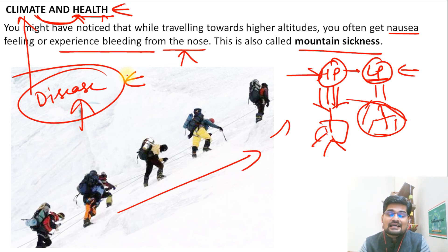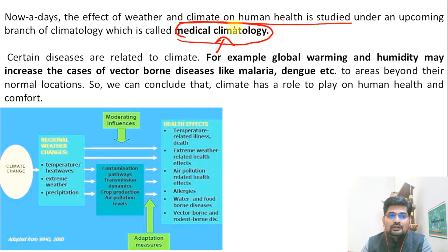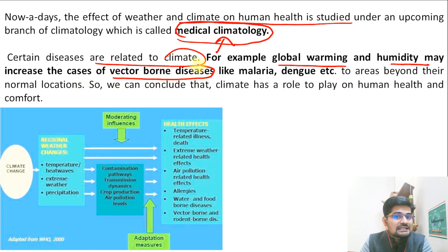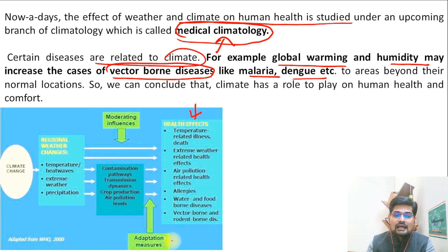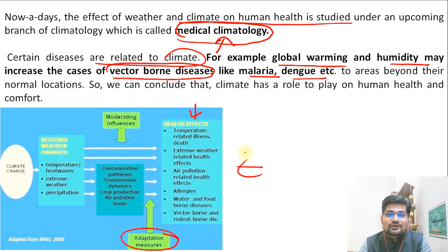That is where medical science and climate science come together. The effect of weather and climate on human health is studied under a specific branch called medical climatology. For example, global warming and humidity may increase cases of vector-borne diseases like malaria and dengue. Many adaptation measures are being taken by various governments, local agencies, and health agencies. Applied climatology is not just about learning climatic concepts in isolation, but looking into its impact on health as well. In the sessions to come, we'll be talking more on other aspects of physical geography — keep watching and stay tuned.